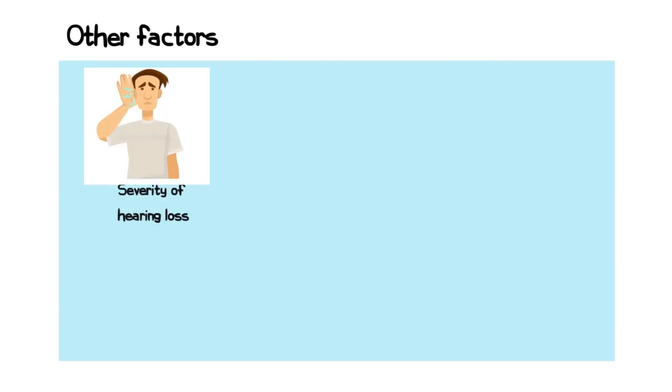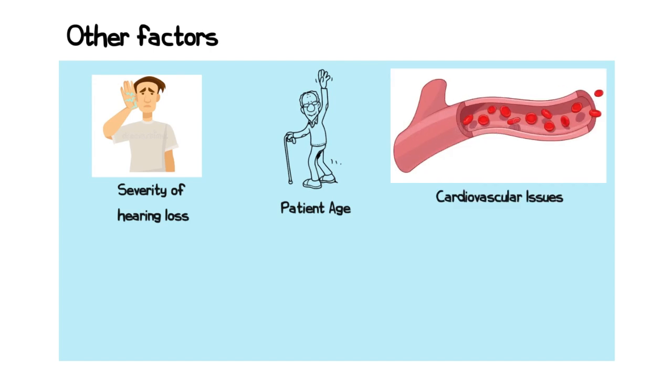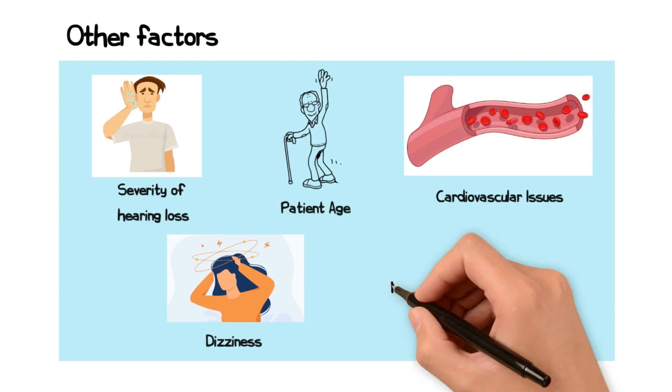Other factors that affect the prognosis include the severity of the hearing loss, the patient's age, any concomitant cardiovascular disease, and the presence of vertigo with first presentation of hearing loss, all of which are associated with poorer outcomes.